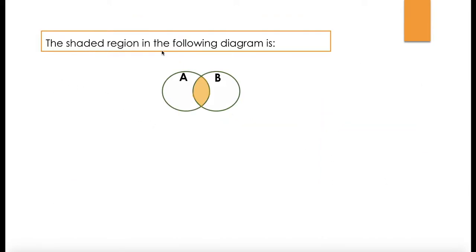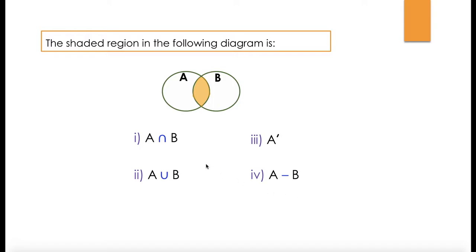Now let's get started with the problems. The shaded region in the following diagram — what is it? The options are A intersection B, A union B, A prime, and a fourth option. The shaded portion here represents the common area of A and B. So is that A intersection B? Yes, it is, because A intersection gives us the common area. This is the correct option.